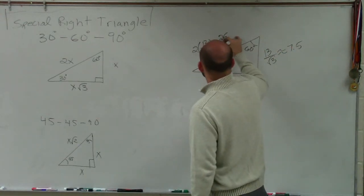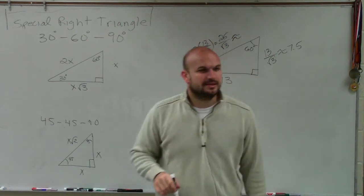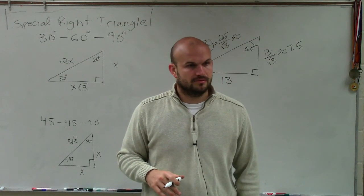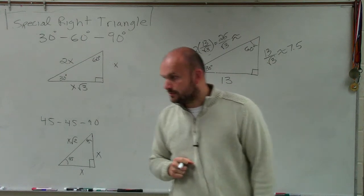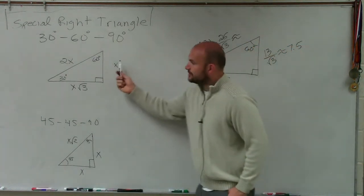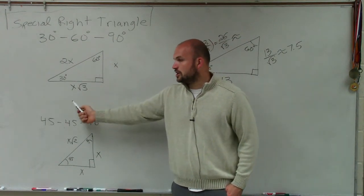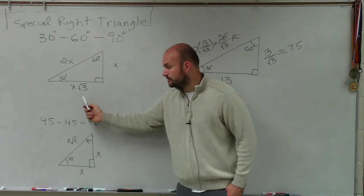So that is 26 over the square root of 3, which approximately was—anybody figure that one out? Because remember, here's the short leg, right? Do you go from the short leg to the longer leg, I multiply by the square root of 3, correct? x multiplied by the square root of 3.